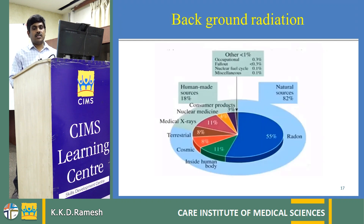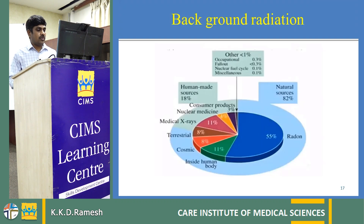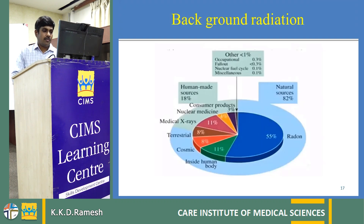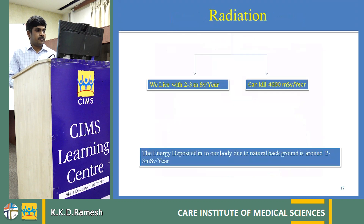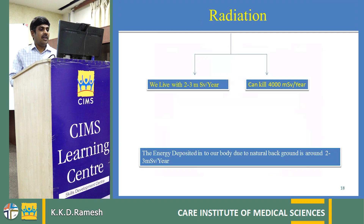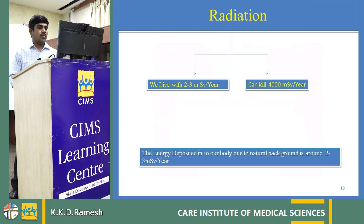The remaining 18% of radiation comes from man-made sources like medical X-rays and nuclear power plants. We are living with about 2 to 3 millisieverts per year of background radiation. It may become lethal when background radiation exceeds 4,000 millisieverts per year.